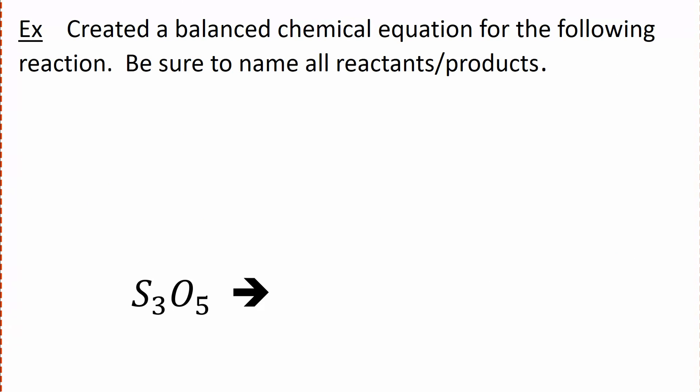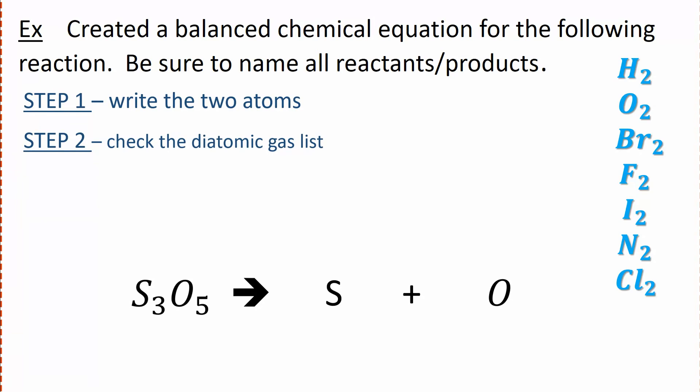This is one of the few times we can incorporate a covalent compound into our four types of reactions. We have a covalent compound written here, so we'll have a different naming convention in the end. Step one says we write out our two atoms. This compound is made of sulfur and oxygen. We'll consult the diatomic gas list. Sure enough, we have oxygen on here, so we'll make this into O₂. Sulfur is not on there.